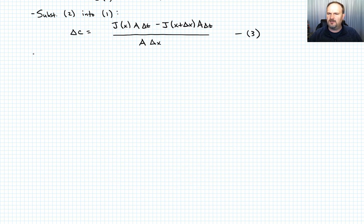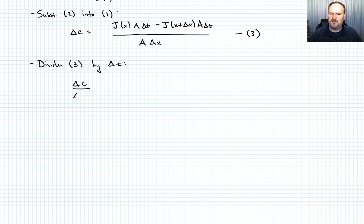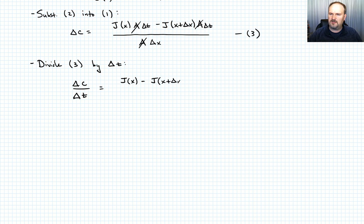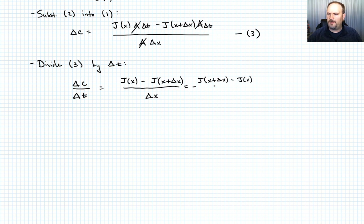Now dividing Equation 3 by delta t, the A's cancel, and we get del C over del t equals J(x) minus J(x + delta x), divided by delta x. Switching the sign, this becomes negative of J(x + delta x) minus J(x), over delta x. Call that Equation 4.